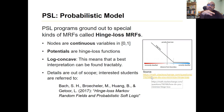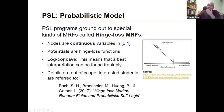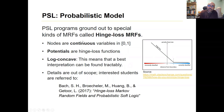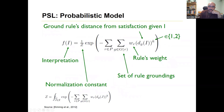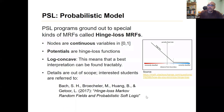PSL programs ground out into special kinds of Markov random fields called hinge-loss Markov random fields. The potentials are hinge-loss functions — that's where the name comes from. They are log-concave, which means a best interpretation — even if there is more than one — can be found very tractably. As promised, this is a continuous-variable Markov random field, not a discrete one, which is why there's an integral instead of a summation — because there are infinitely many ways of assigning numbers to these atoms.